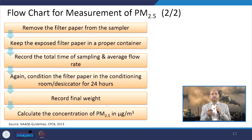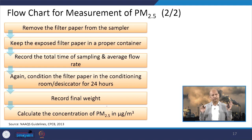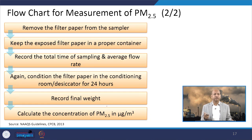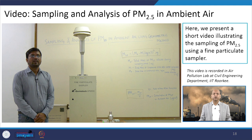Remove the filter paper from the sampler, keep it in a particular container so it is not disturbed, and take it to the laboratory where we record all flow rate values. Condition the filter paper again in a conditioning room for 24 hours and record the final weight. The difference of the final and initial weight gives the total mass collected; we know the volume of air from the flow rate and time duration, so we divide to calculate the PM 2.5 concentration in ambient air. We now present a short video illustrating the sampling procedure of PM 2.5 using the fine particulate collection sampler, prepared in the air pollution laboratory of the Civil Engineering Department of IIT Roorkee.